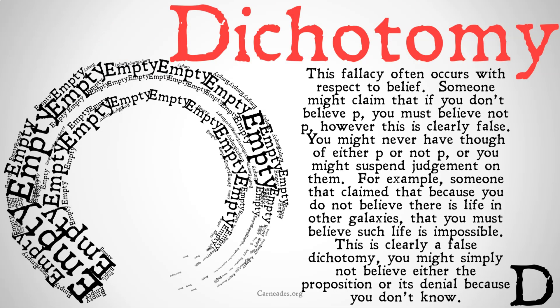The fallacy occurs sometimes with respect to belief. Someone might claim that if you don't believe P, you must believe not-P. However, this is clearly false. You might never have thought of either P or not-P, or you might suspend judgment on them both. For example, someone might claim that because you do not believe there is life in other galaxies, you must believe that such life is impossible, or that there is certainly no life in any other galaxies.